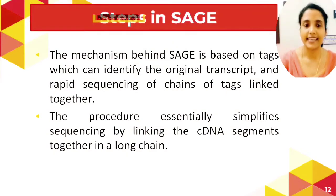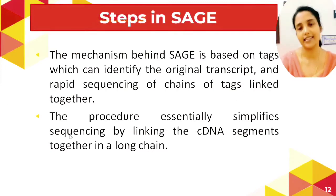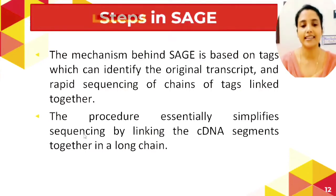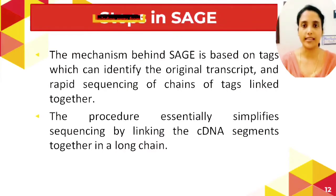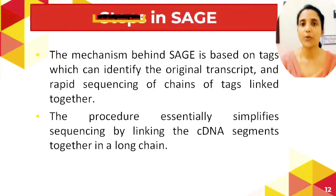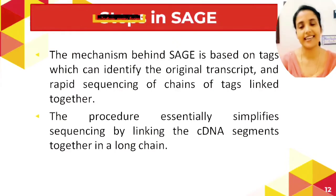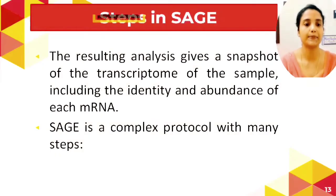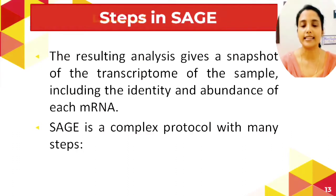The mechanism behind SAGE is based on tags that can identify the original transcript, and rapid sequencing of chains of tags linked together. The procedure simplifies sequencing by linking cDNA segments together in a long chain — you only have to sequence the tags, not the whole cDNA. The resulting analysis gives a snapshot of the transcriptome, including the identity and abundance of each mRNA.